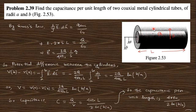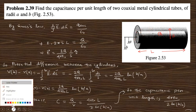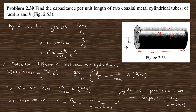We place charge Q on the inner cylinder. Using a Gaussian surface of length l and radius s (where a < s < b), Gauss's law gives E·(2πsl) = Q/ε₀. Solving, the electric field between the cylinders is E = Q/(2πε₀) · (1/s) ŝ.